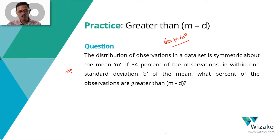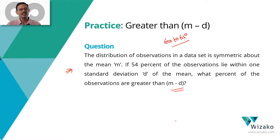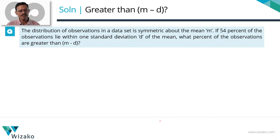Let's get started with this question. The distribution of observations in a data set is symmetric about the mean. If 54% of the observations lie within one standard deviation d of the mean, what percentage of the observations are greater than mean minus deviation? It's absolutely zero calculation other than one bit of addition. It's about understanding what each of these sentences actually means. Let's decode it and solve this question.